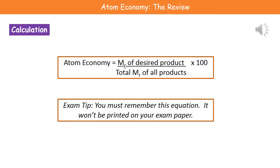This is the equation you need to use to calculate atom economy. Note that this equation will not be given to you on your exam paper, so you've got to memorize it. The atom economy equals the molecular mass of your desired product — the thing you want to make — divided by the total molecular mass of all of the products, multiplied by 100 to get your answer as a percentage.